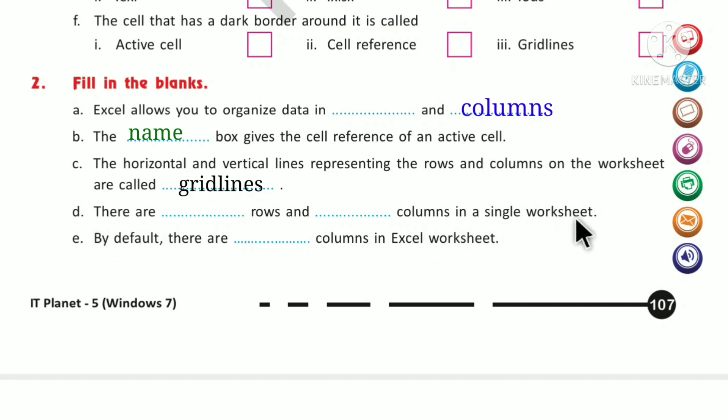There are 1,048,576 rows and 16,384 columns. Question E: By default, there are _____ columns in Excel worksheet. By default, there are 16,384 columns in Excel worksheet. Now see the answers: 16,384.